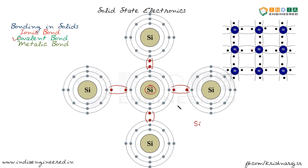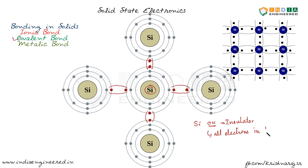Now, if you look at the conductivity of silicon at zero Kelvin, where all electrons are held in the bonds, the silicon acts as an insulator — and this is a popular exam question. At zero Kelvin, electrons do not have energy to break the bonds and come out to contribute to the flow of charges. Since charge flow means current flow, silicon at zero Kelvin acts as an insulator because all electrons are in the bond and do not have sufficient energy to break it.